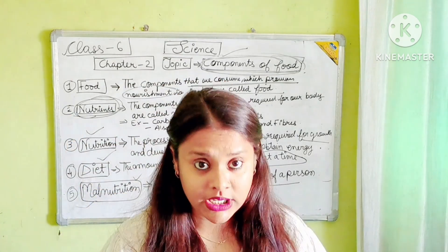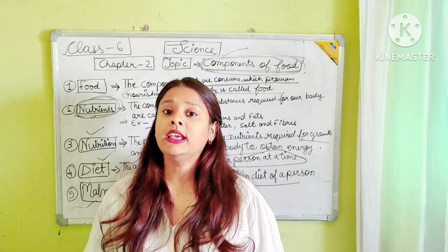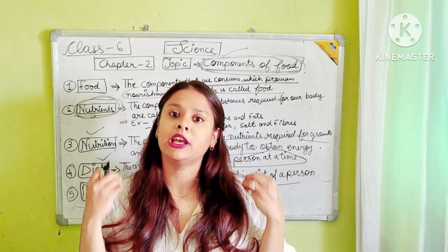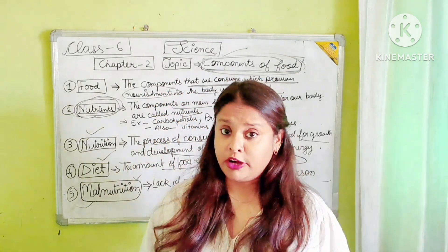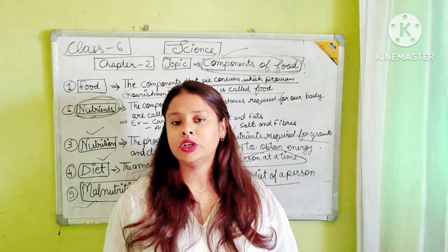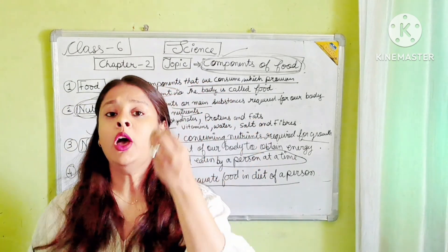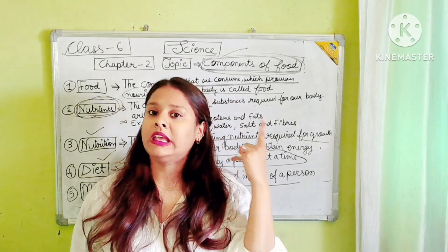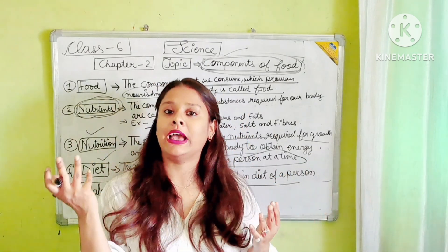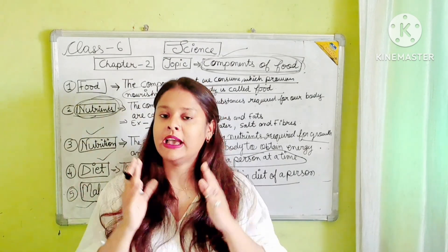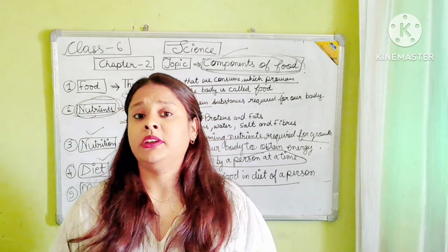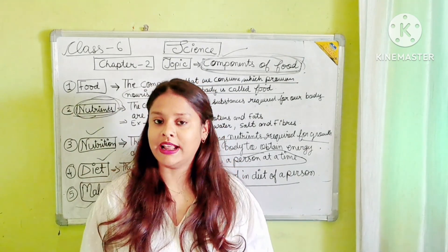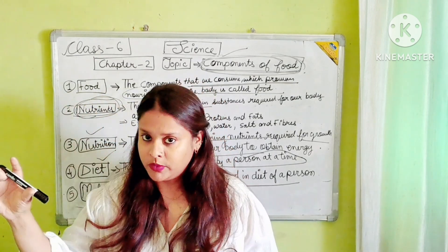Food helps us to provide energy, it helps in the nourishment of our body, and it helps in the repairment of tissues. These are the purposes of food. We either get food from plants or animals. Products of food that we get from animals are regarded as animal products, and those from plants are regarded as plant products. We have also discussed about three types of animals based on what food they eat.